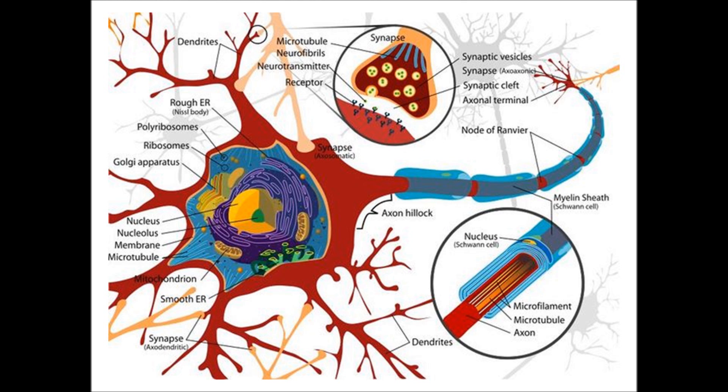Points to be remembered in this lesson: nerve tissue has neurons and supporting cells called glial cells. In nerve tissue, all the cells have similar structure and functions.